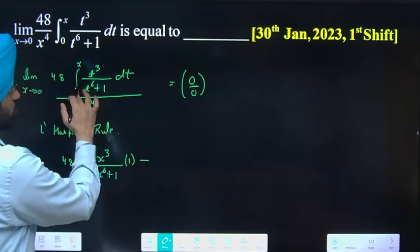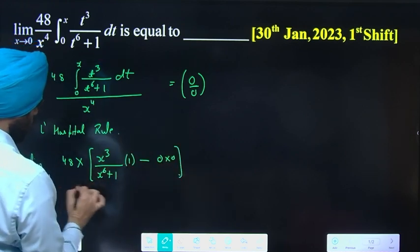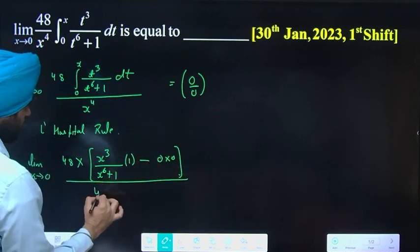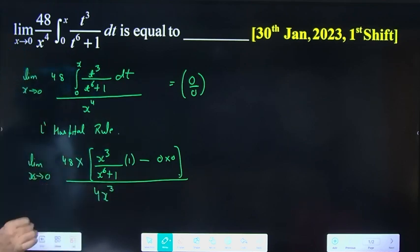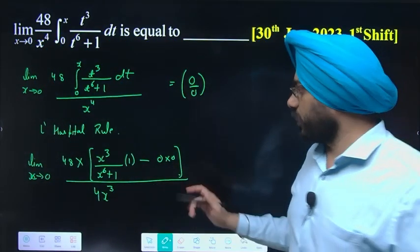Minus 0 put, the term is 0 and differentiation is 0. Whole upon denominator term differentiation 4x^3.